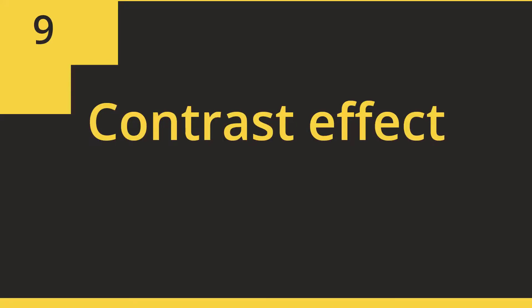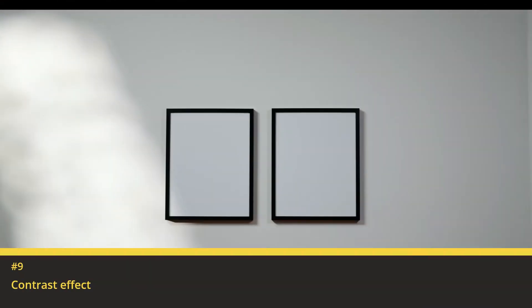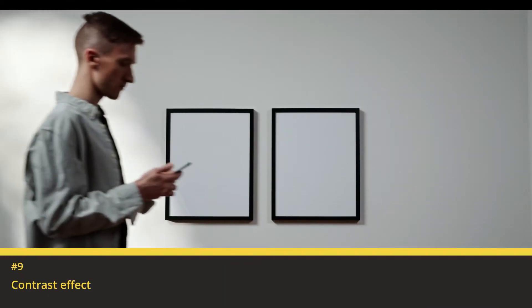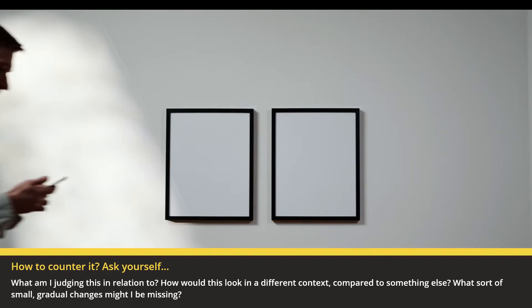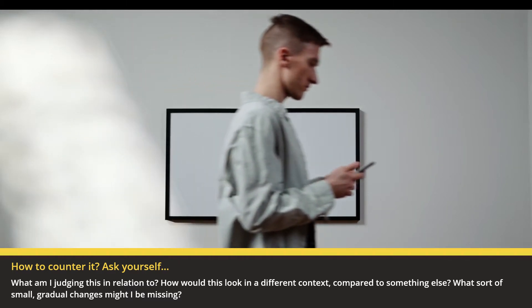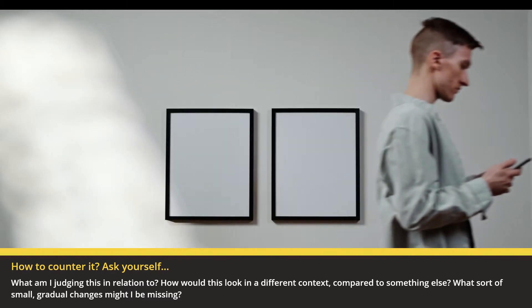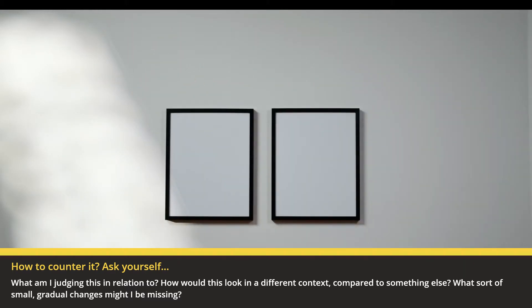9. Contrast Effect: We judge things in relation to other things. We also don't notice small, gradual changes. How to avoid this bias? Ask yourself: what am I judging this in relation to? How would this look in a different context, compared to something else? What sort of small, gradual changes might I be missing?